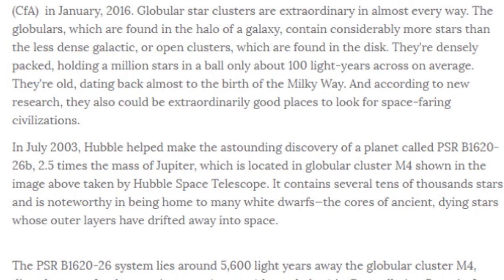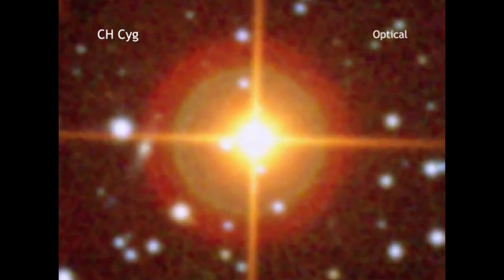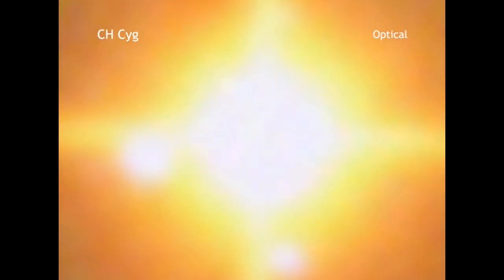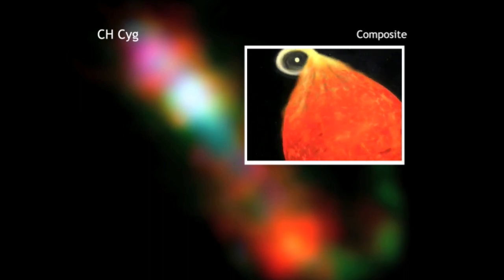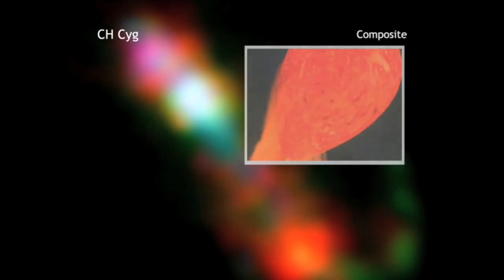They're densely packed, holding a million stars in a ball only about a hundred light years across on average. No wait, what if that globular cluster is in a ball but it's flat? Ever thought of that? There's an idea. I'm throwing that out there, probably to agitate people because I'm agitated. They're old, dating back almost to the birth of the Milky Way. They're still alive. Wow, that's crazy. And according to new research, they also could be extraordinarily good places to look for space-faring civilizations.